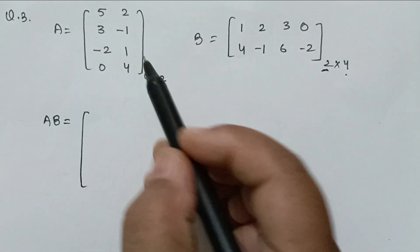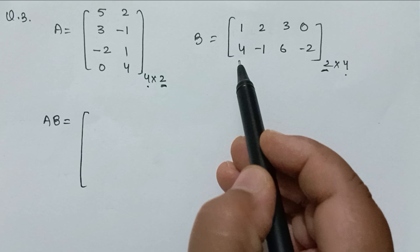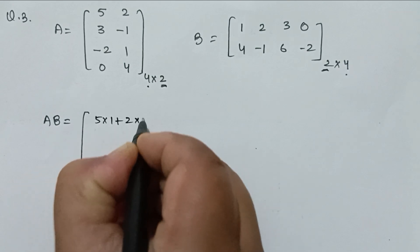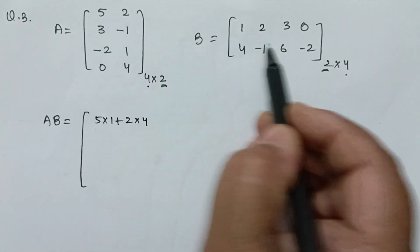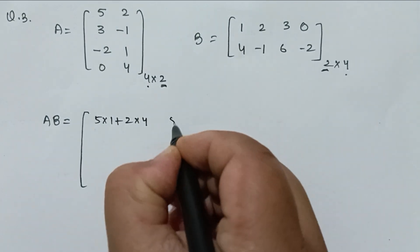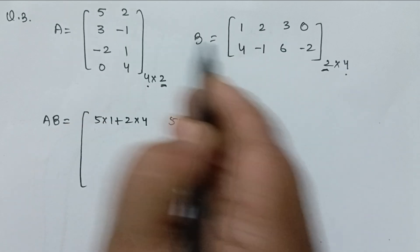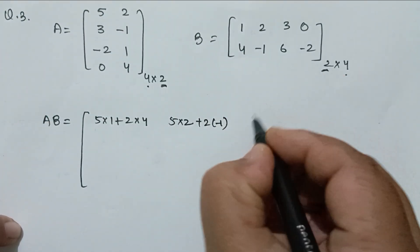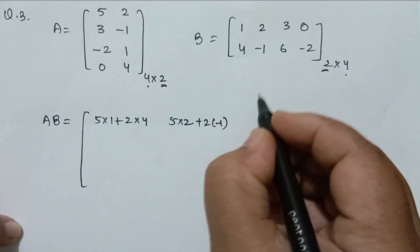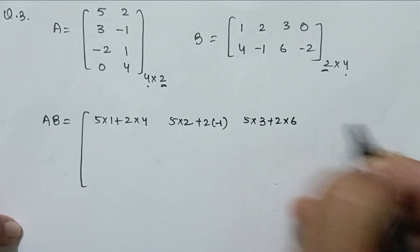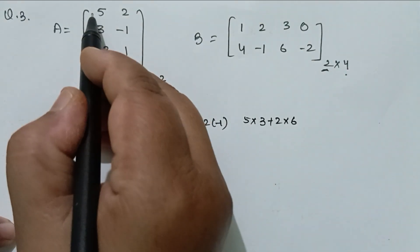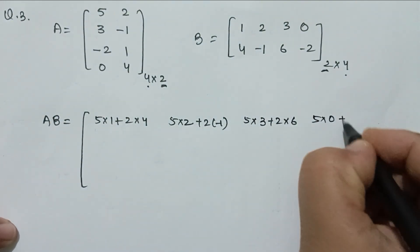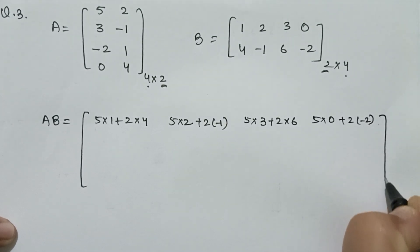For the first element, we multiply the first row of A by the first column of B: 5×1 plus 2×4. Then first row, second column: 5×2 plus 2×(−1). First row, third column: 5×3 plus 2×6. First row, fourth column: 5×0 plus 2×(−2). This gives us the complete first row of matrix AB.